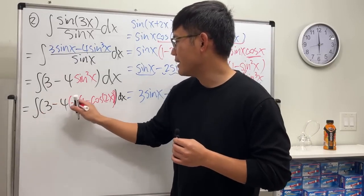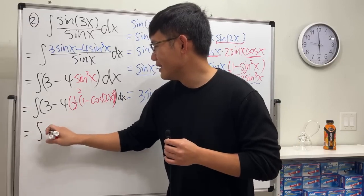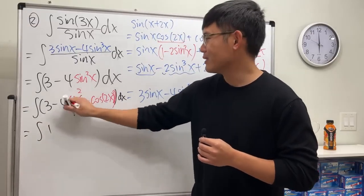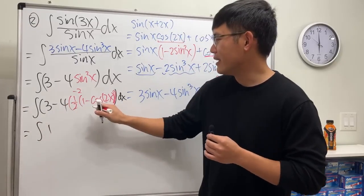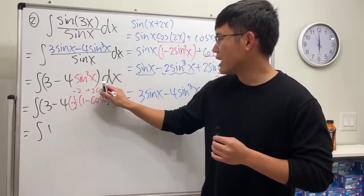So now this right here is just 2, and we distribute it. So you see this right here is 3 minus all together we have 2, okay, so it becomes 1. This is minus 2, and then this and that is 2 times that is plus 2 cosine of 2x.